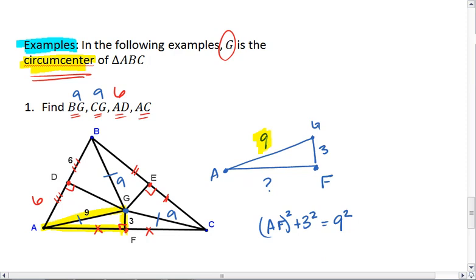The most important thing is to identify your hypotenuse. That's always the side opposite your right angle. I can go through and solve the problem, getting AF squared plus 9 equals 81, which tells me that AF squared equals 72.